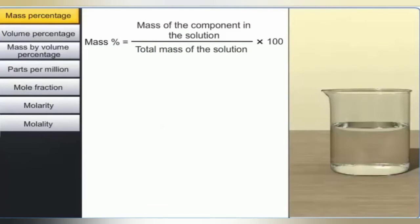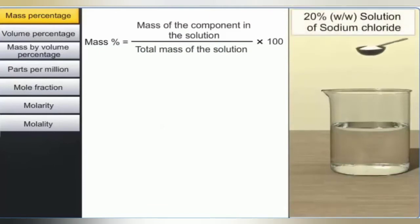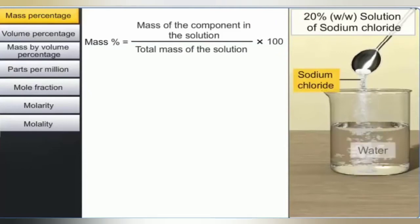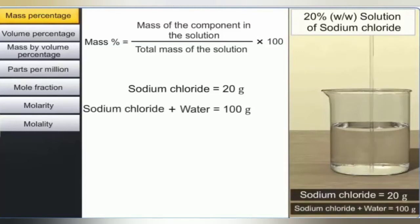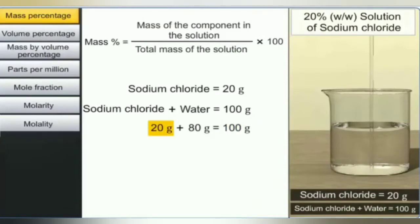For example, a 20% weight by weight solution of sodium chloride in water means that 20 grams of sodium chloride is present in 100 grams of the solution. The total mass of the solution is always equal to the sum of the mass of the solute and the mass of the solvent. Therefore, if 100 grams of solution has 20 grams of solute, then the weight of solvent (water) is 80 grams.